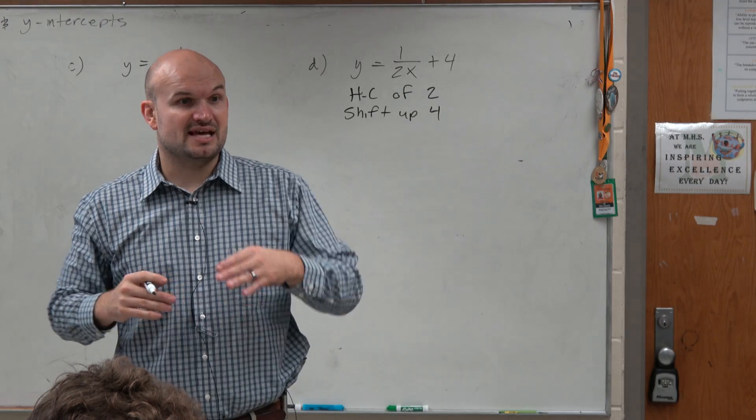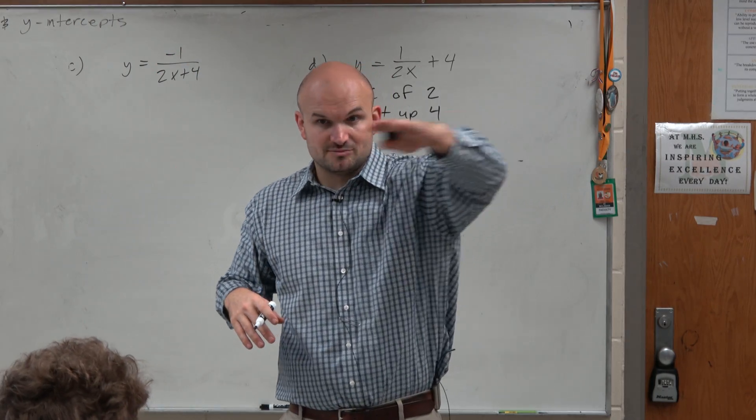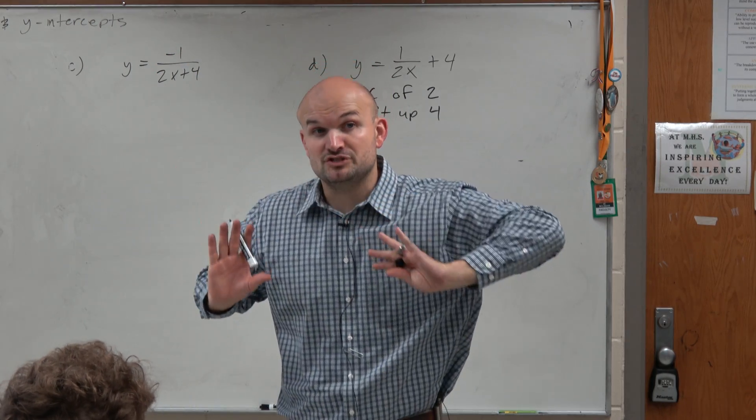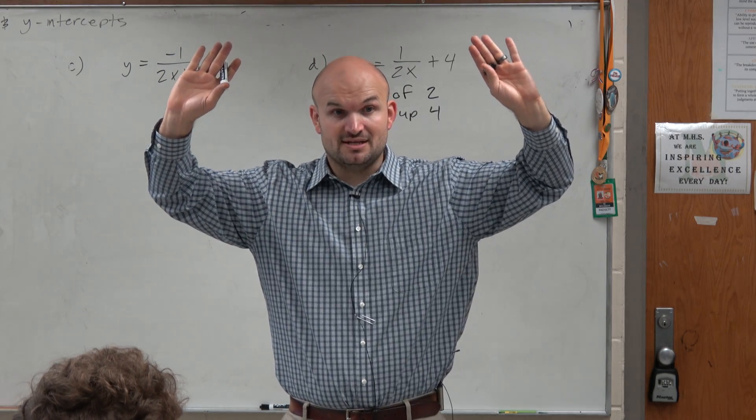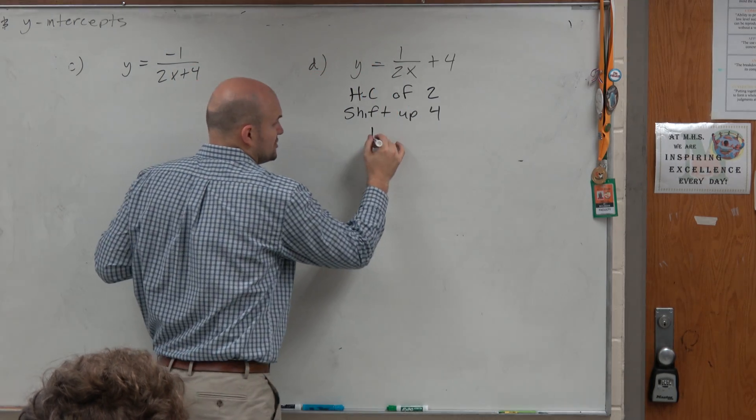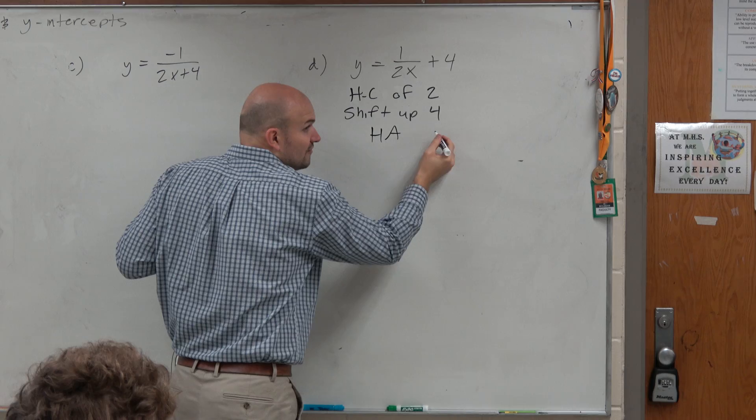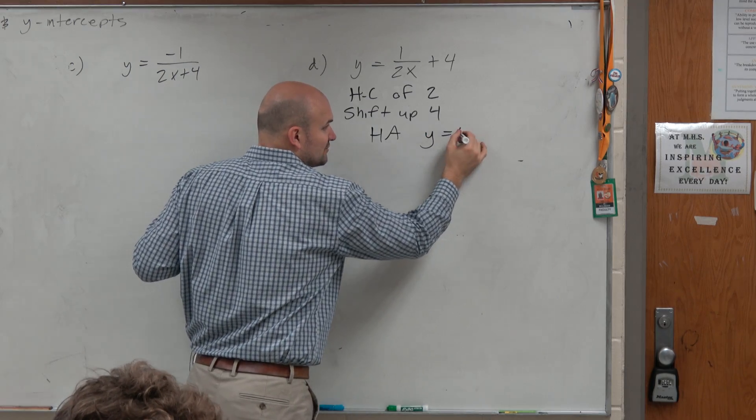Now, that's important, because if I originally had a horizontal asymptote at 0, but the graph just got shifted up 4 units, I have a new horizontal asymptote at 4. So it's y is equal to 4.